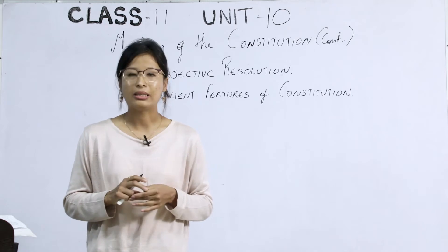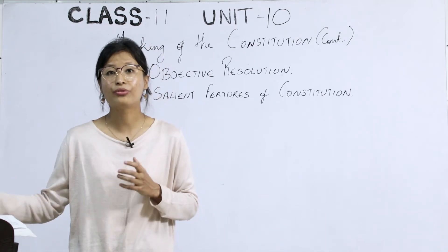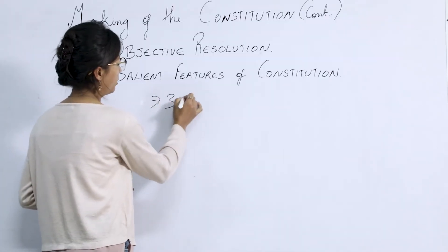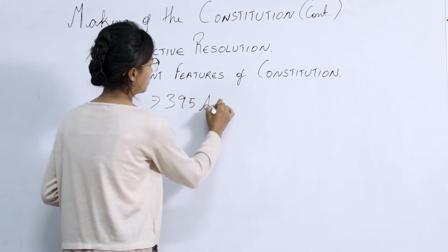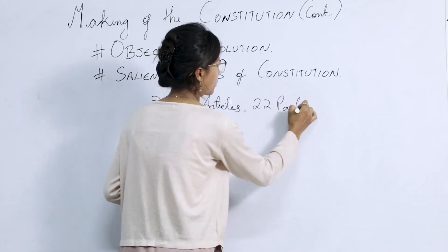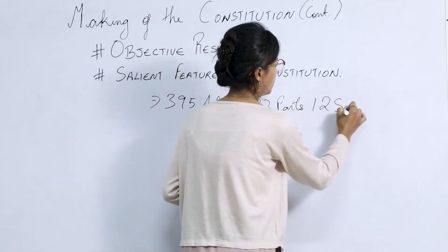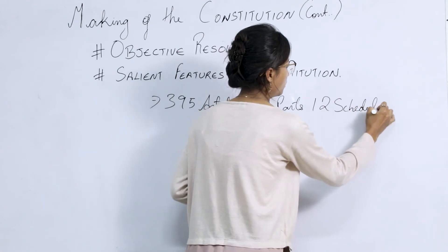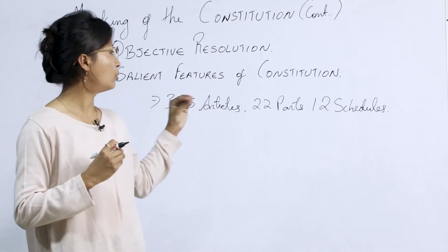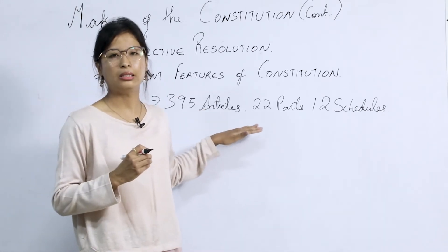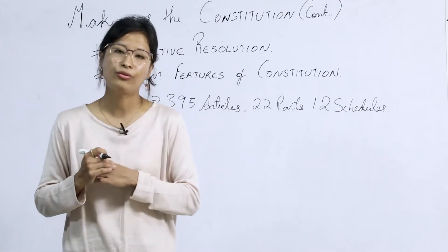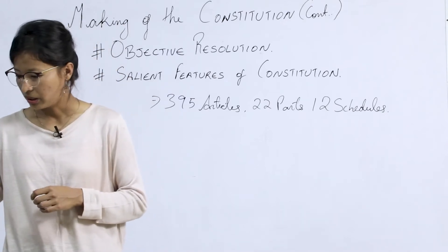Point number two: the Indian constitution is the lengthiest constitution ever framed by a free country. It has around 395 articles divided into 22 parts and 12 schedules. With these, it makes the Indian constitution one of the lengthiest constitutions ever framed by a free country.